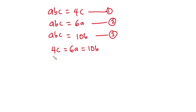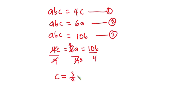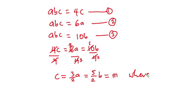From here, let's divide through by 4, so that the 4 will cancel. Now we have c is equal to — 4 goes into 4 once, and into 6 giving 3/2 — so we have (3/2)a. This is also equal to — 4 goes into 4 twice and into 10 giving 5/2 — so we have (5/2)b.